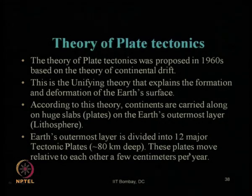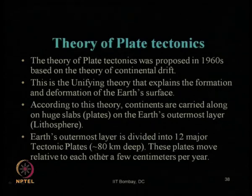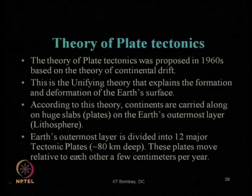The earth's outermost layer is divided into twelve major tectonic plates, typically about 80 kilometers deep. These plates move relative to each other by a few centimeters per year — meaning even today these different plates of earth are moving by a few centimeters. These twelve major tectonic plates can be both oceanic plates and continental plates.